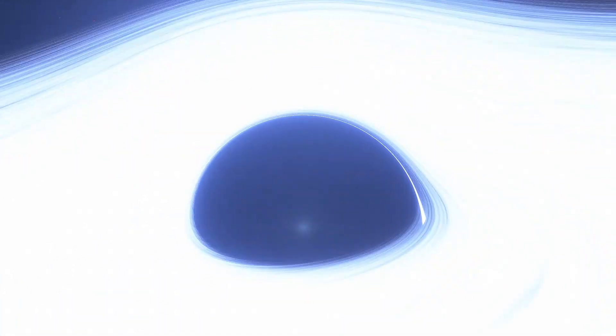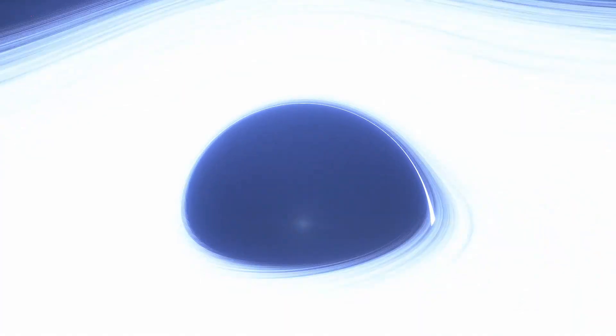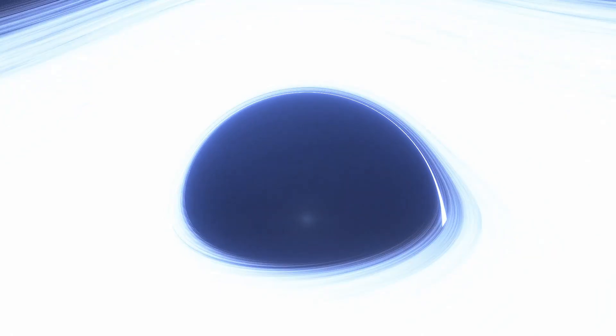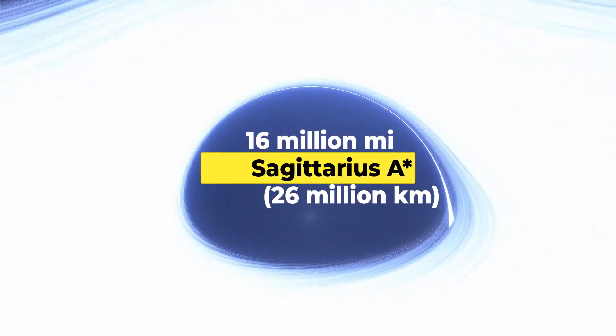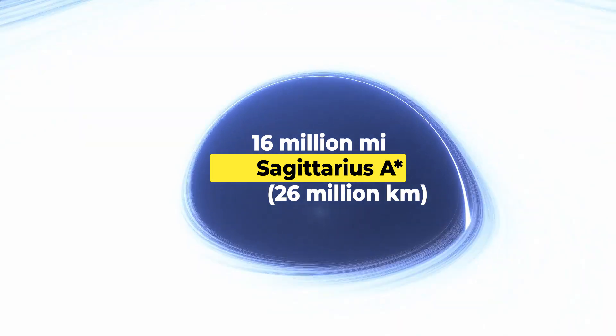The size of a black hole is defined by its event horizon, a distance from the center of the black hole within which nothing can escape. Scientists had previously been able to calculate that Sagittarius A is 16 million miles, 26 million kilometers in diameter.